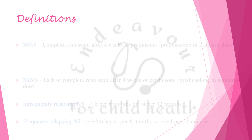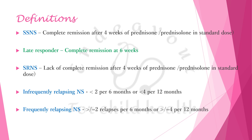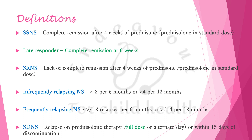While steroid-sensitive, steroid-resistant, infrequently relapsing, and frequently relapsing nephrotic syndrome have been defined as previously, a new term called late responder has been introduced — one in whom complete remission was achieved at 6 weeks of steroid therapy. A change has also been introduced in defining steroid-dependent nephrotic syndrome: relapse even on full dose of steroid should also be considered as steroid-dependent nephrotic syndrome, in addition to relapse on alternate day or within 15 days of discontinuation.